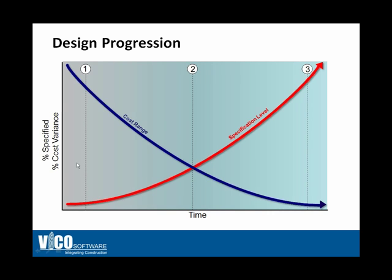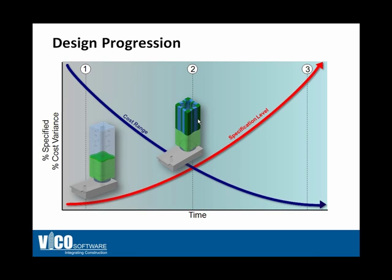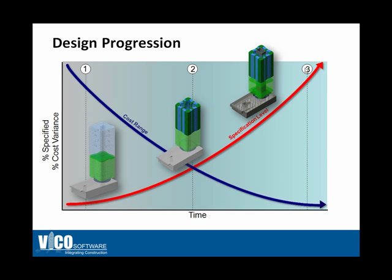Throughout the design phases, however, as decisions are being made, the specification level goes up, and that means you narrow the cost range you need to work with. We can project example stages of the model on that curve, starting with the conceptual design model and gradually adding more detailed information, working towards a schematic design model. Number three is the as-built situation, when the specification level is 100% and the cost range is zero.